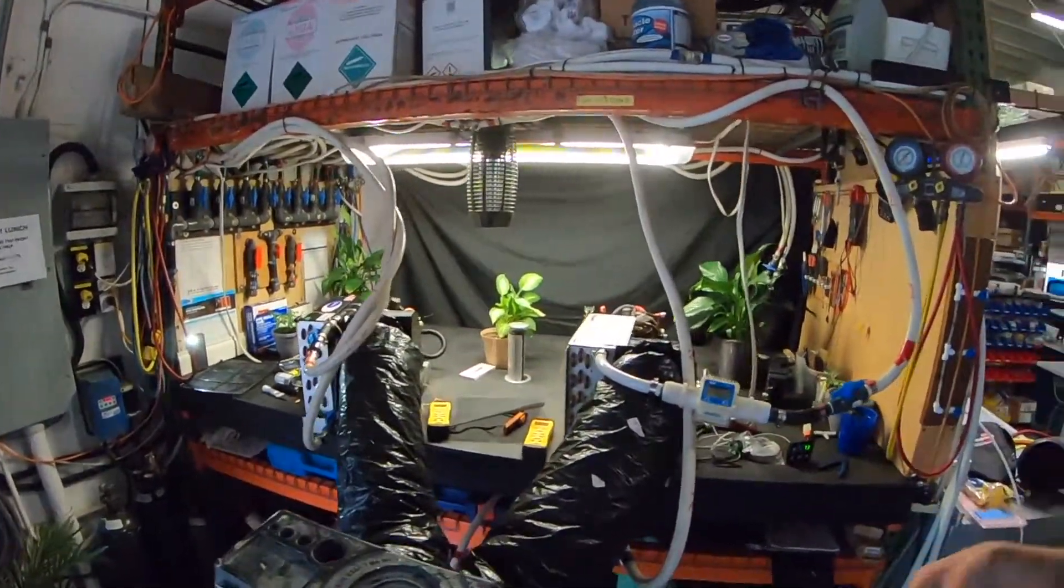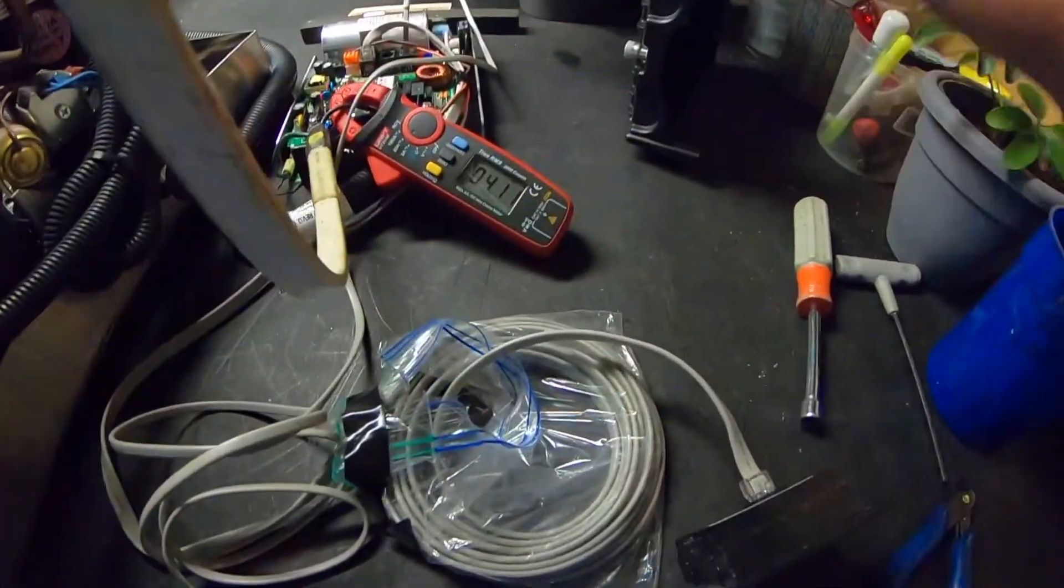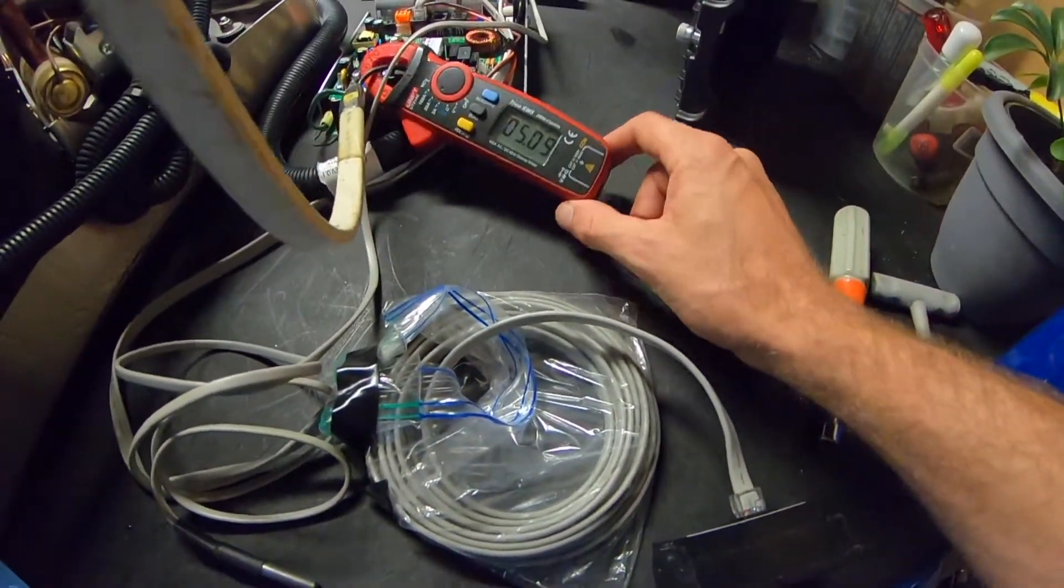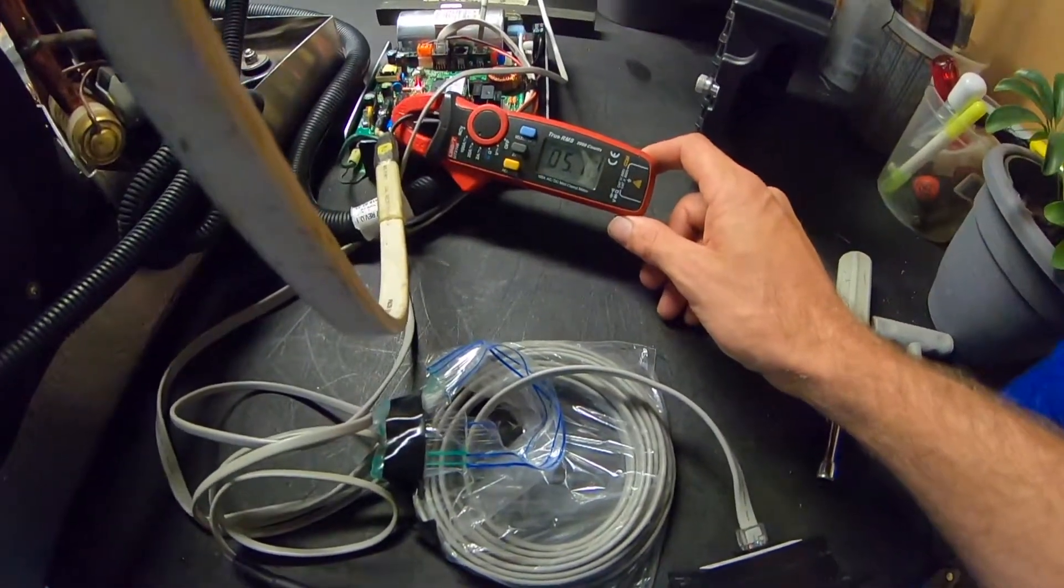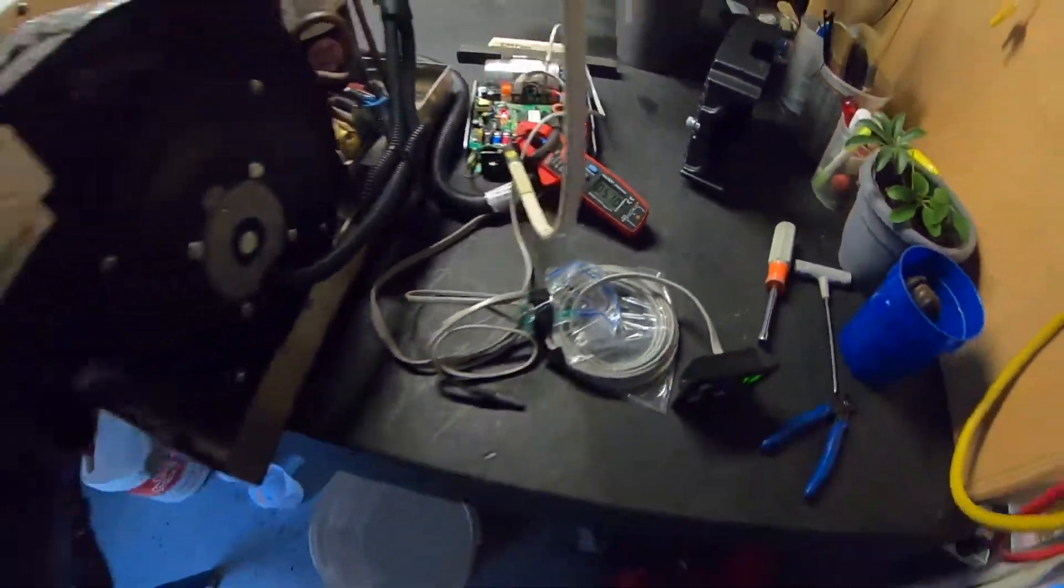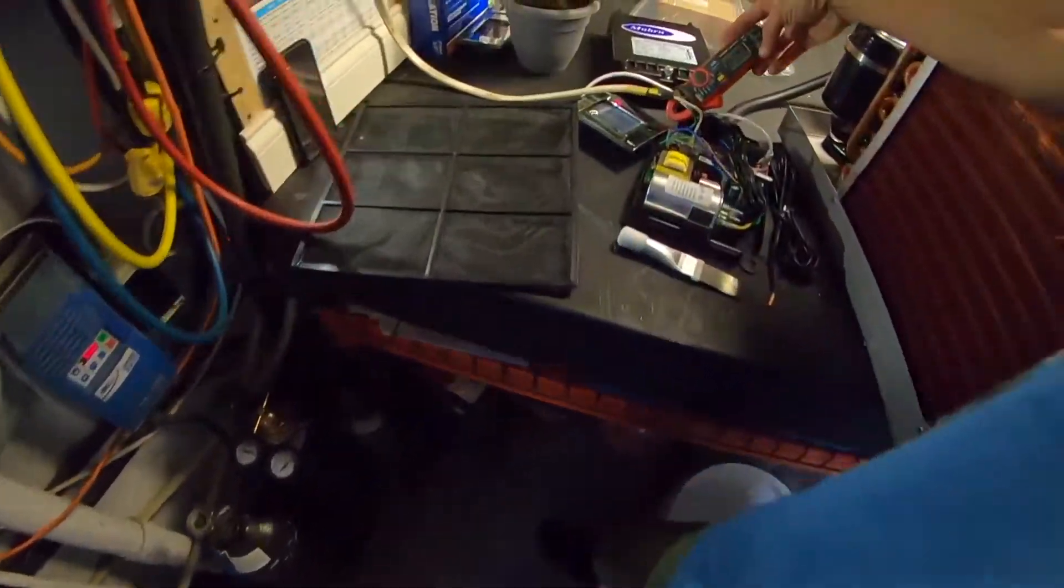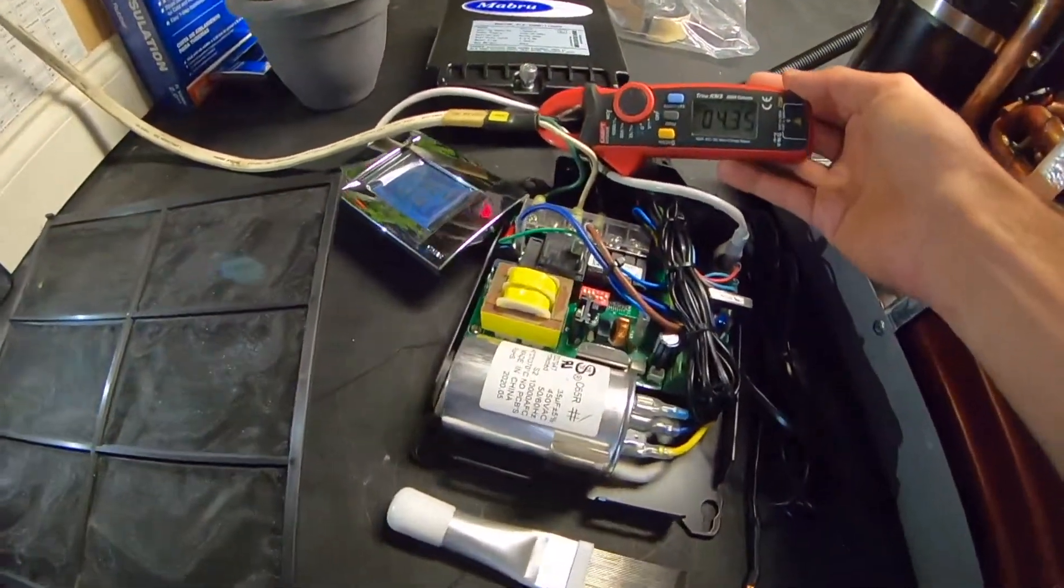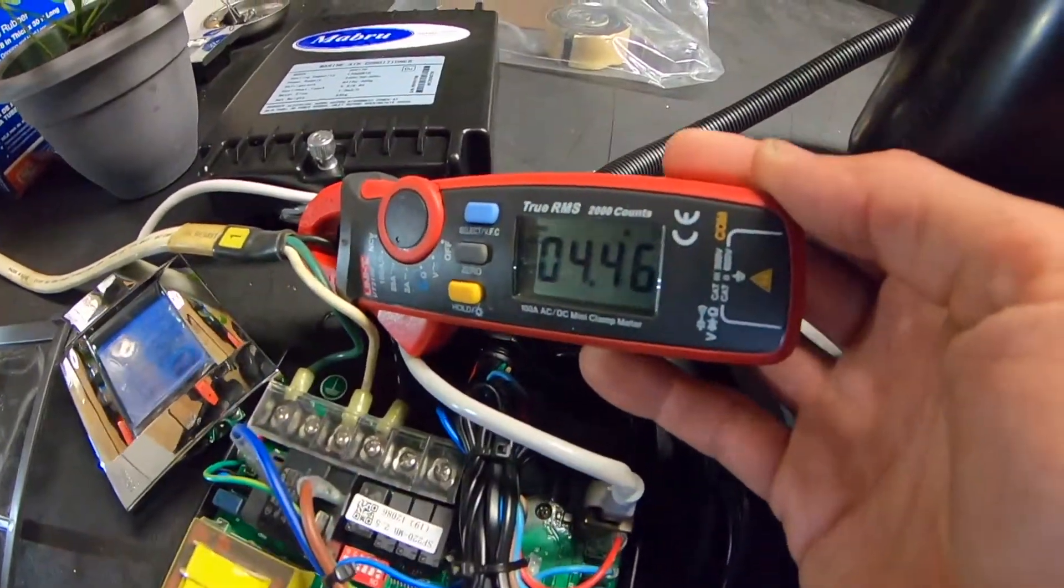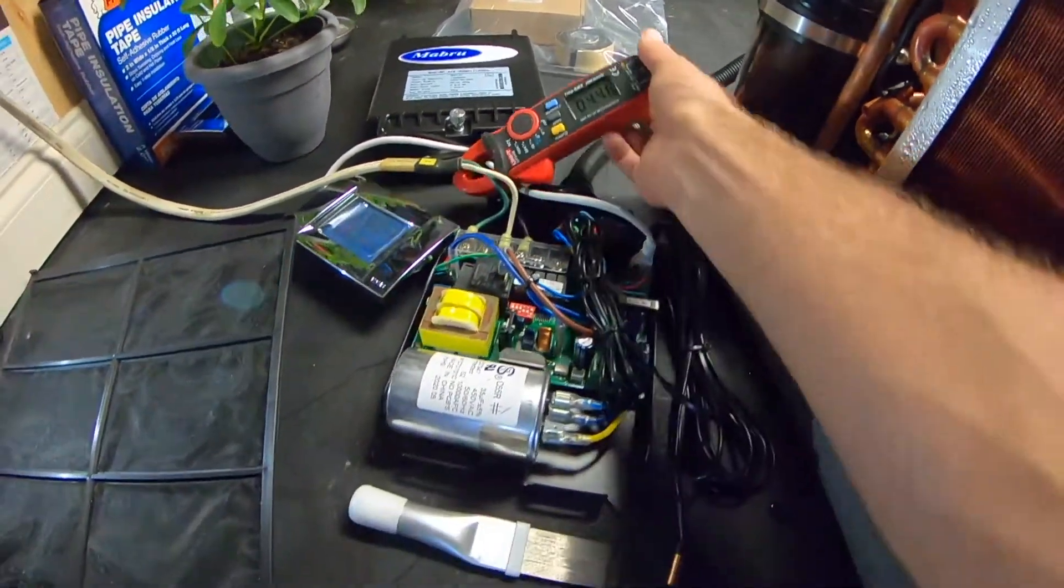Now let's talk about amperage draw. Coming over here to this unit, once again keep in mind it's a 16,000 BTU. This unit is drawing 5.1 amps. This is at 230 volts, that's 16,000 BTU. Then we have our unit, it's a 17,000 BTU. We're drawing 4.5 amps. So we're drawing half an amp less.